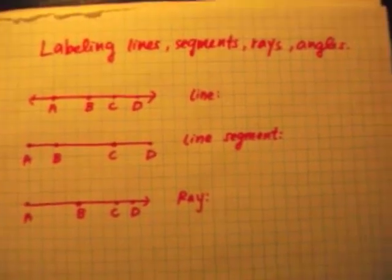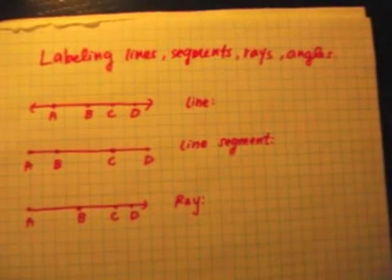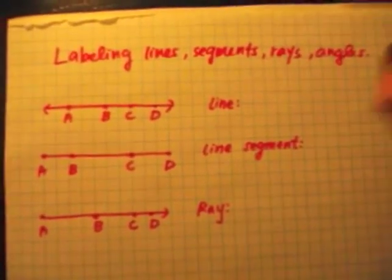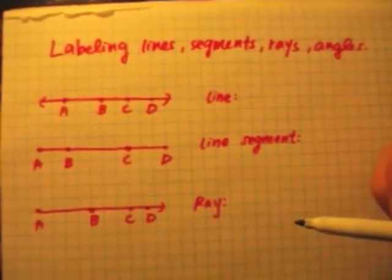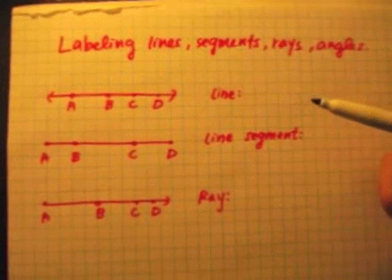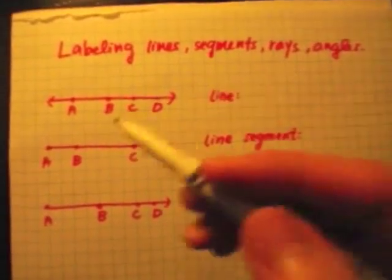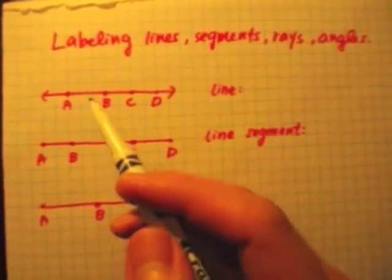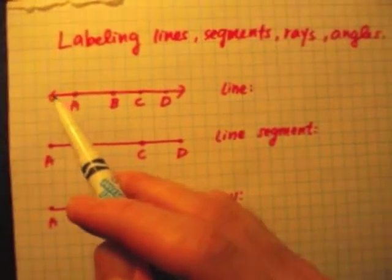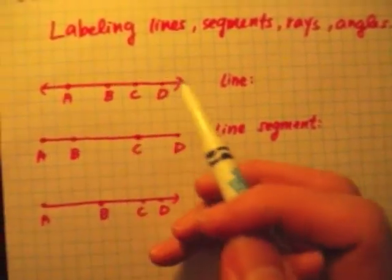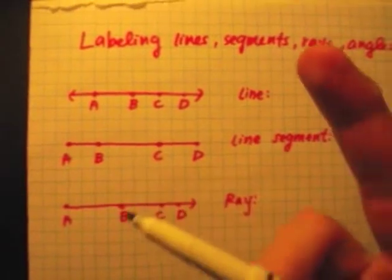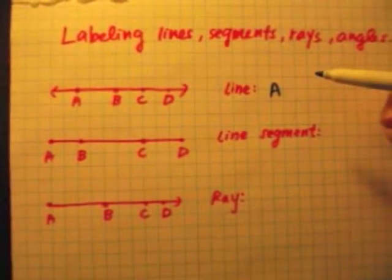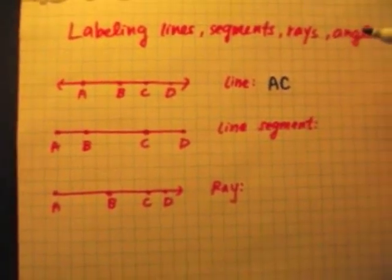When you want to label a line, it's pretty simple. All you need to know is that you can only use two points. Which two points you use is up to you. You can use A and C, B and D, A and D — it doesn't matter, because the line extends forever in both directions. That's what the arrows are for. So you pick any two points. I'm going to go with A and C.